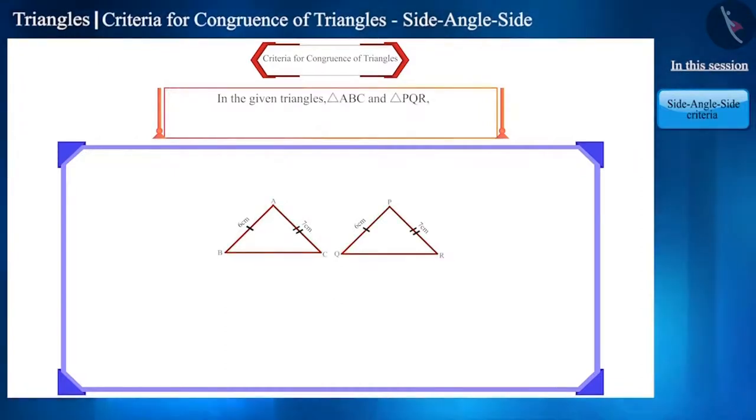Friends, in triangle ABC and triangle PQR on the screen, both the sides AB and PQ are 6 cm and sides AC and PR are 7 cm. So, will two triangles be congruent if the two sides of any two triangles are equal?